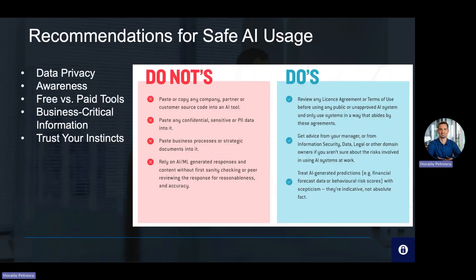Given these risks, it's essential to approach AI with caution. For data privacy, refrain from inputting personal or sensitive data into generative AI tools. In terms of awareness, familiarize yourself with the terms of use and privacy policies of large language models. Be careful when choosing free versus paid tools — while free generative AI tools might be tempting, they might lack robust privacy and security measures, and paid tools come with their own set of risks. Be careful around business critical information, and avoid using generative AI for essential business information or on public-facing channels. And trust your instincts — if you're unsure about using tools like ChatGPT at work, it's best to err on the side of caution.